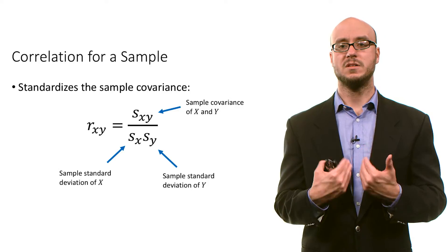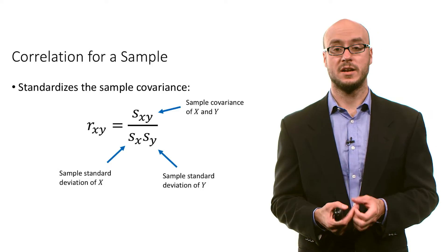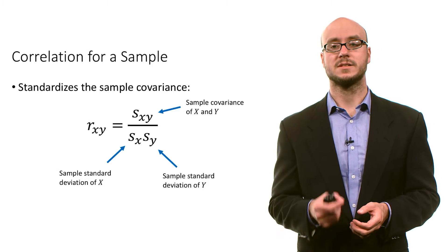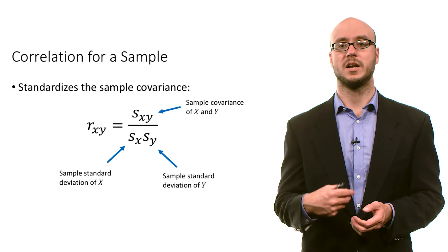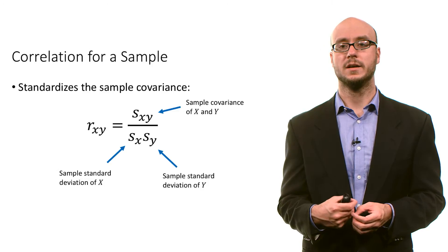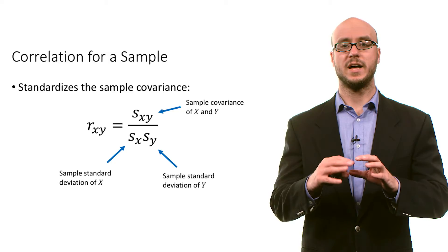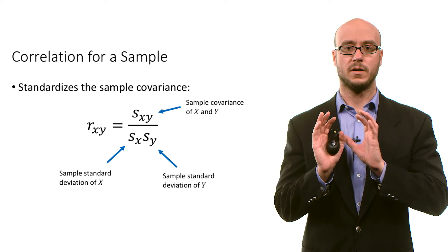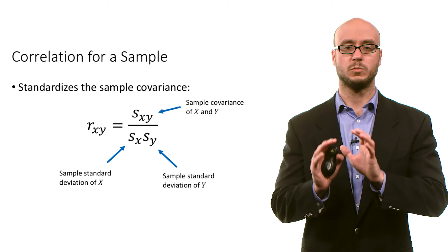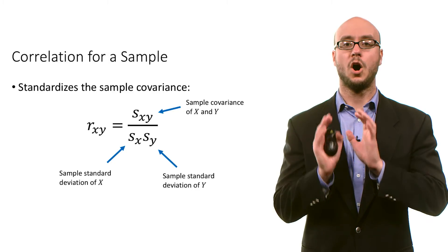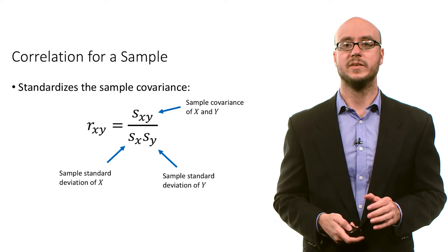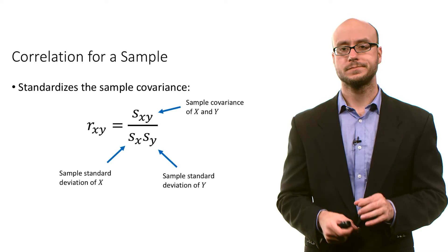and you divide by the sample standard deviation of x times the sample standard deviation of y. Then we get this value of the correlation, which we call r when we have a sample.